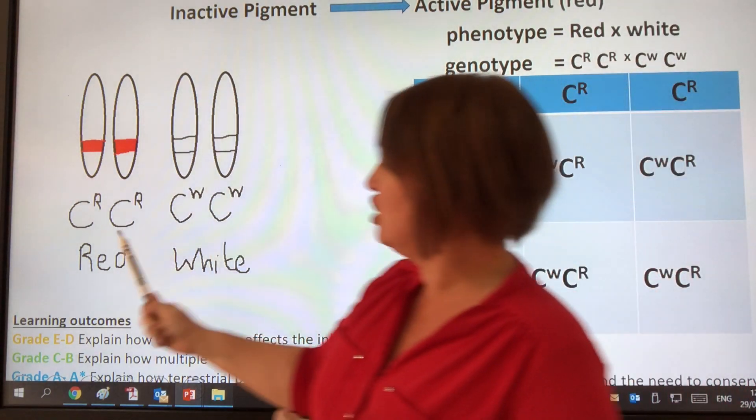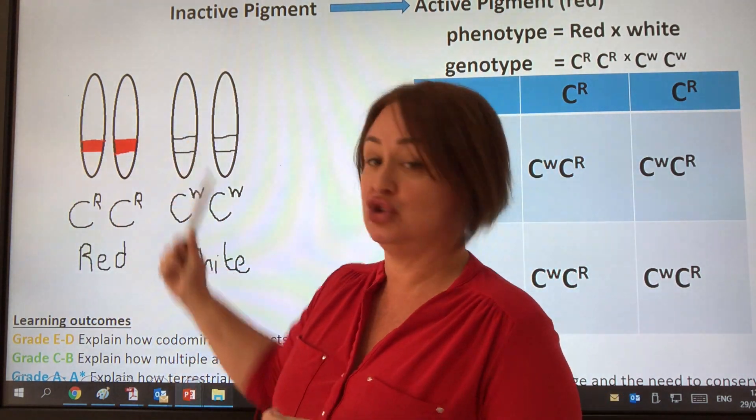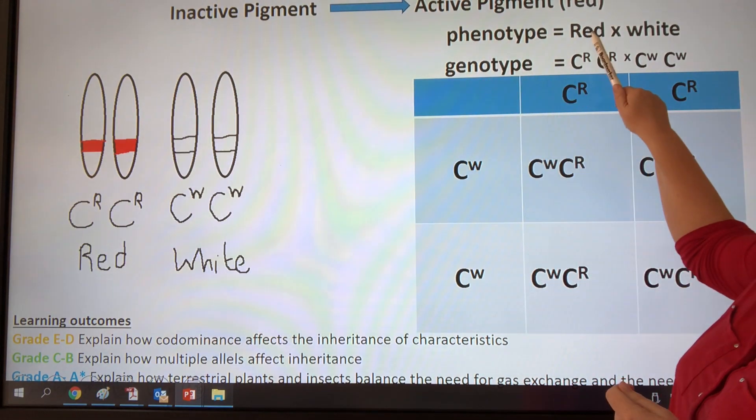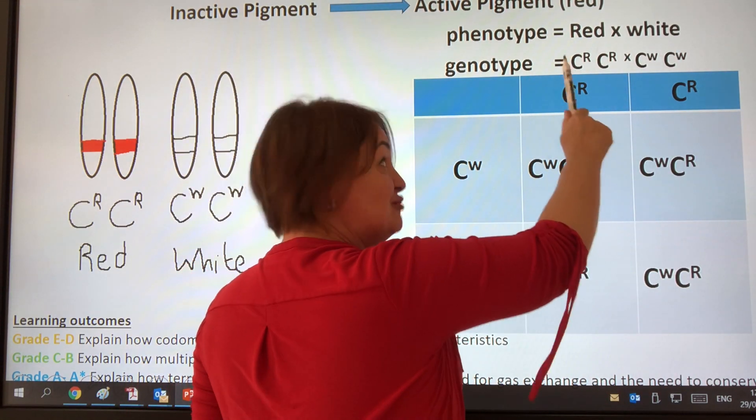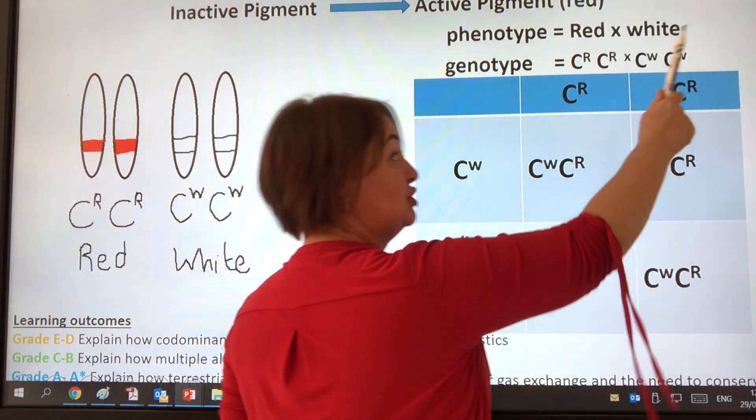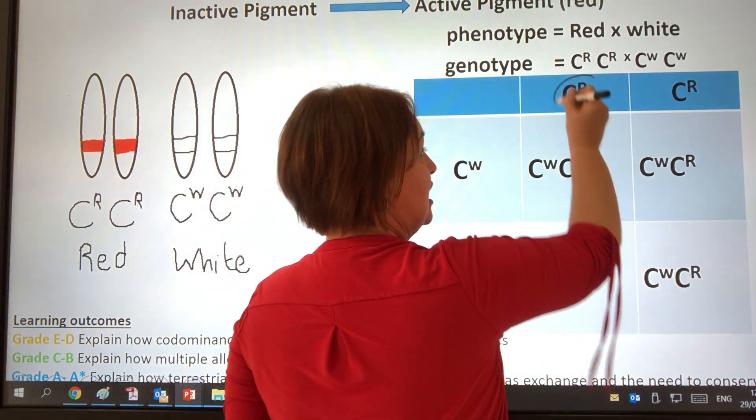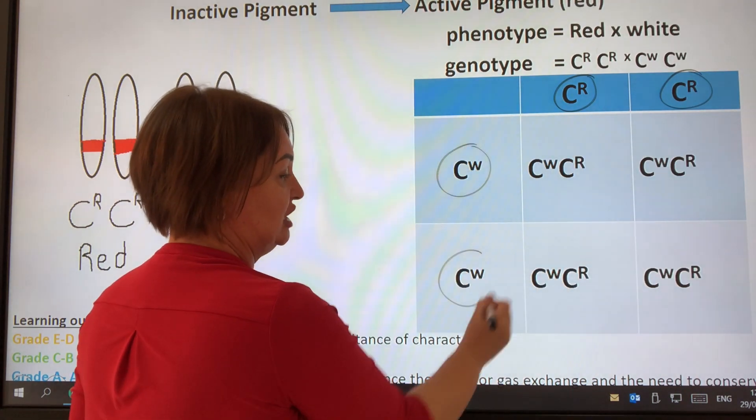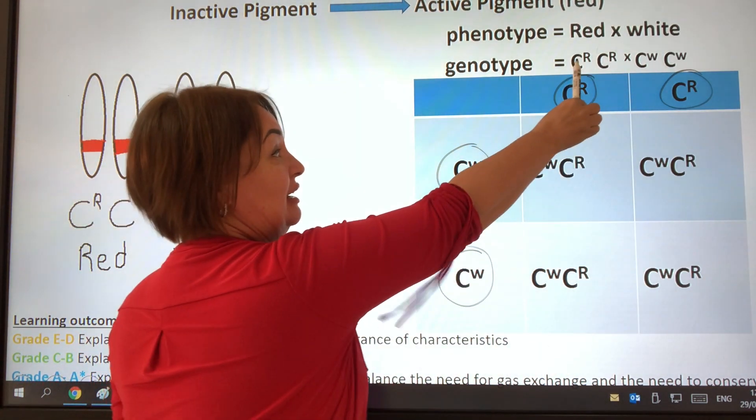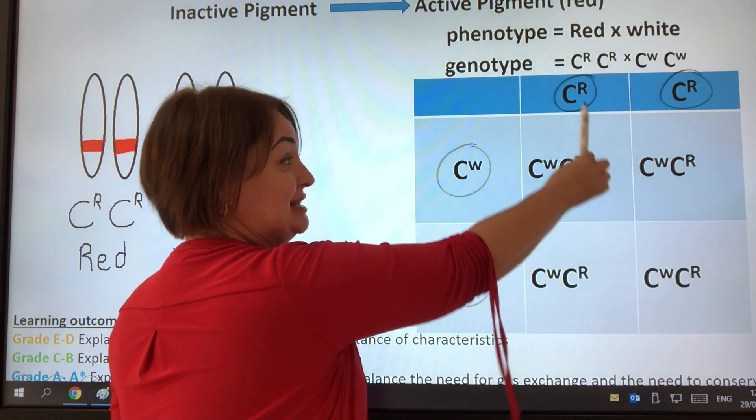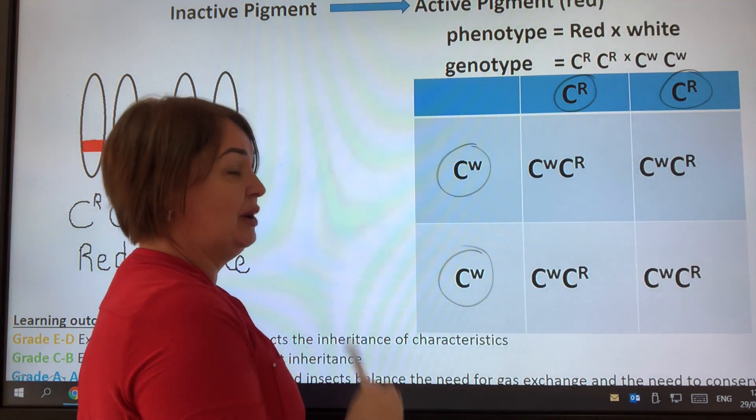Let's have a look at what happens when we cross a red flowered plant with a white flowered plant. In other words, when it has the enzyme and when it doesn't have the enzyme. The phenotype of one flower would be red, and the phenotype of the other flower would be white. The genotypes, for it to be red, it must have both alleles. And remember when we put this into a Punnett square, we have to circle these to show that these are actually the gametes. We can see that the only gamete this plant can make is CR, and the only gamete this plant can make is CW.